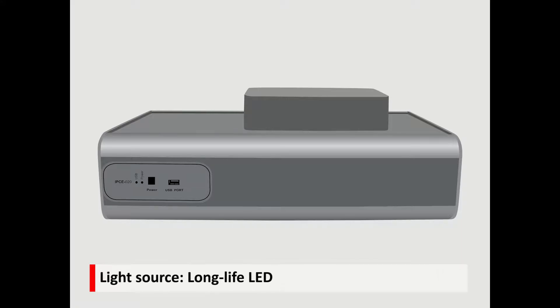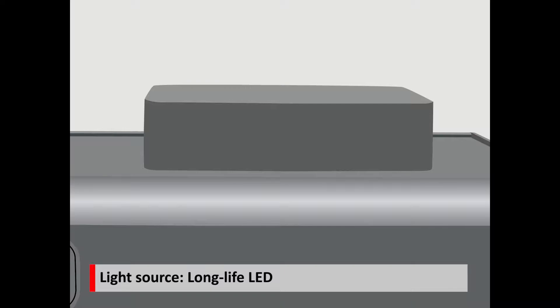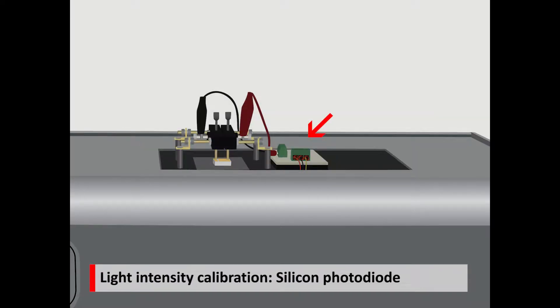The monochromatic light is produced by long-life LEDs. A calibrated reference cell is pre-installed on the measurement stage to measure the real value of light intensity at each wavelength.